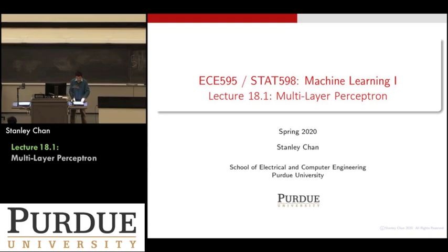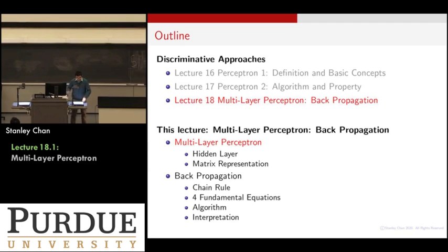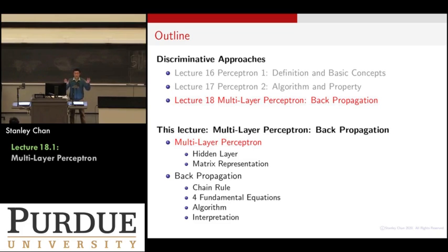I want to talk about multi-layer perceptron and then we will talk about backpropagation. Here's the outline: the first half of the lecture we will introduce a thing called the hidden layer. In the previous lecture when we talked about single layer perceptron, you only have input and then you have a sigmoid function and you get an output. There's nothing in between — a very simple linear formation model and then a nonlinear activation.